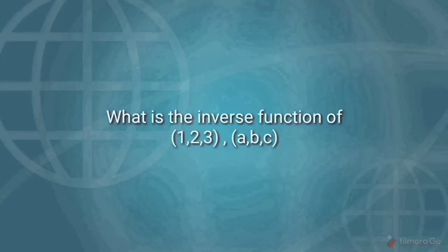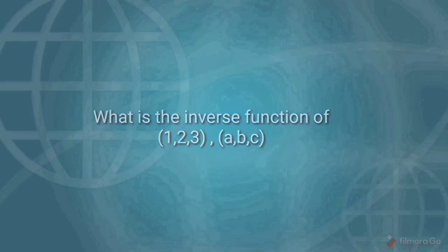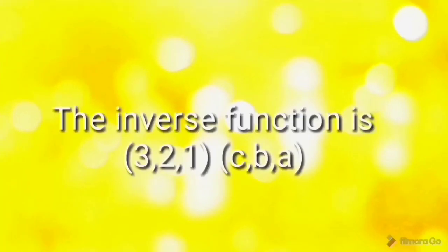What is the inverse function of the set {1, 2, 3} mapped to {A, B, C}? The inverse function maps back: {A→1, B→2, C→3}, giving pairs (C,3), (B,2), (A,1).